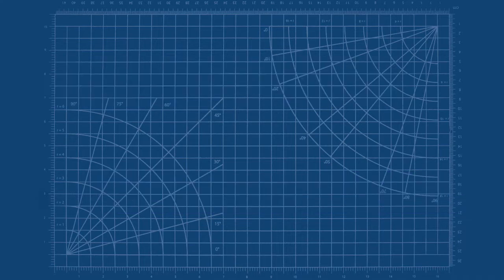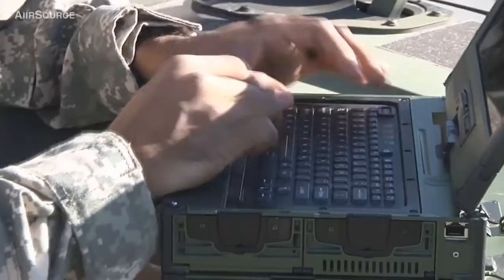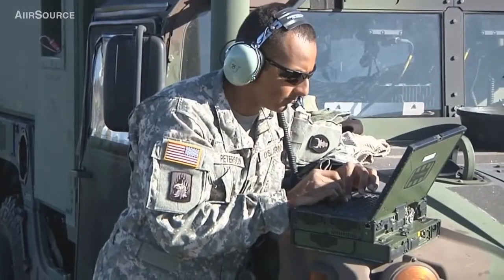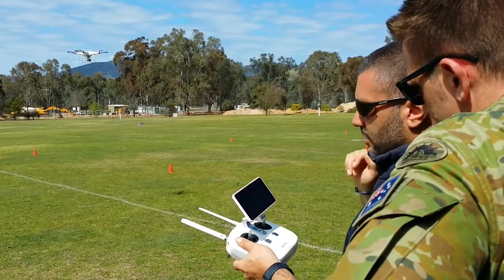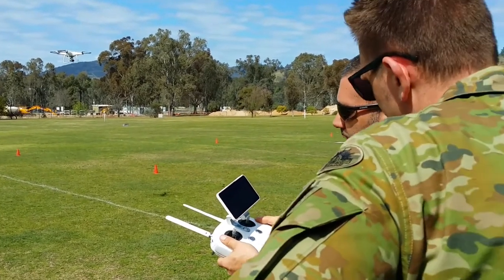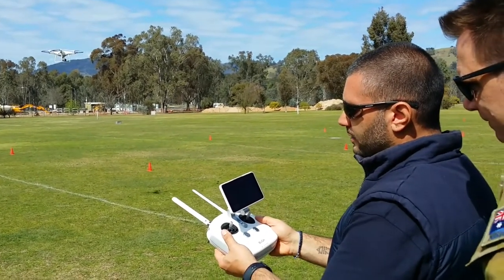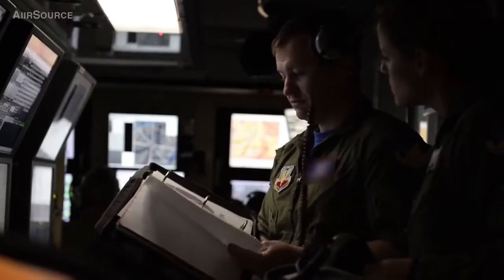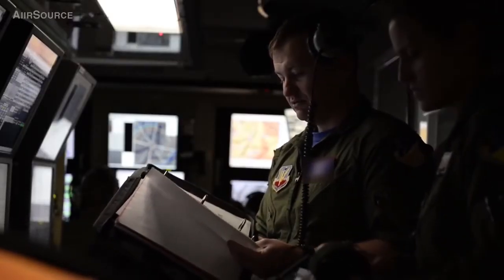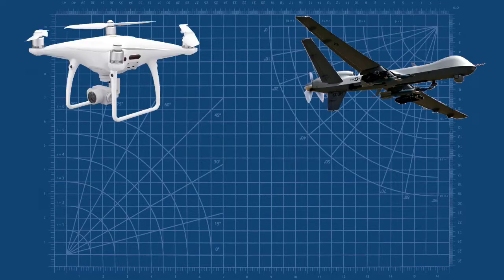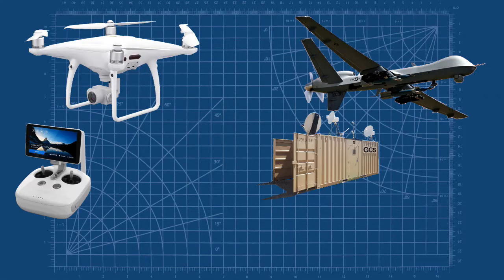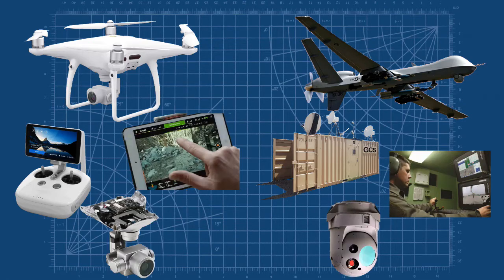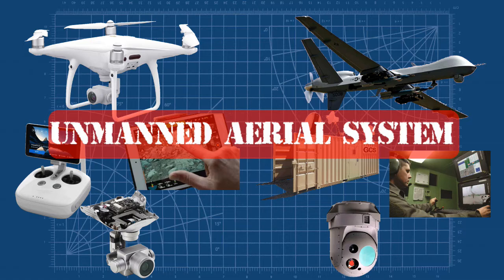But a UAV is only part of the whole system. A UAV has to be controlled from somewhere else. A ground-based handheld radio transmitter is normally used for the control of small UAVs. For larger aircraft, this may take the form of a ground control station, or GCS. The whole system, which includes the unmanned aerial vehicle, the radio transmitter or ground control station, and all the other equipment required to complete the mission — such as software, onboard equipment, computers, etc. — is collectively known as an unmanned aerial system, or UAS.